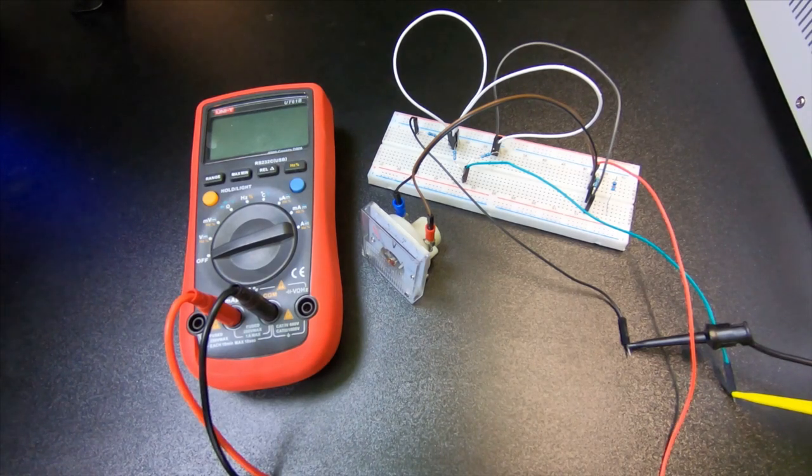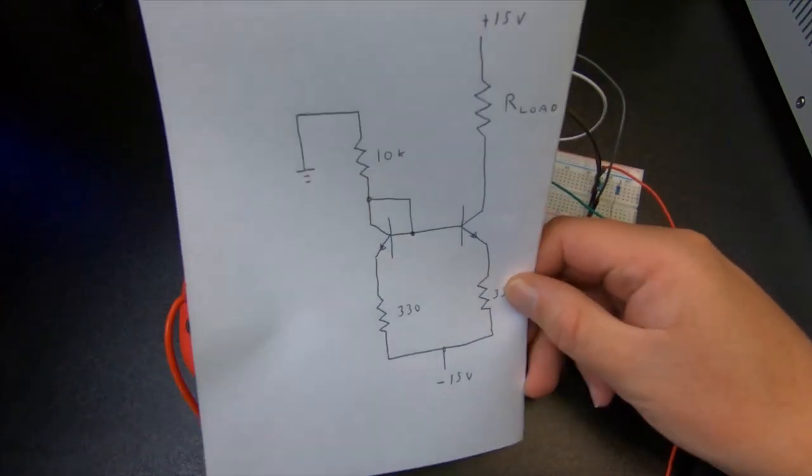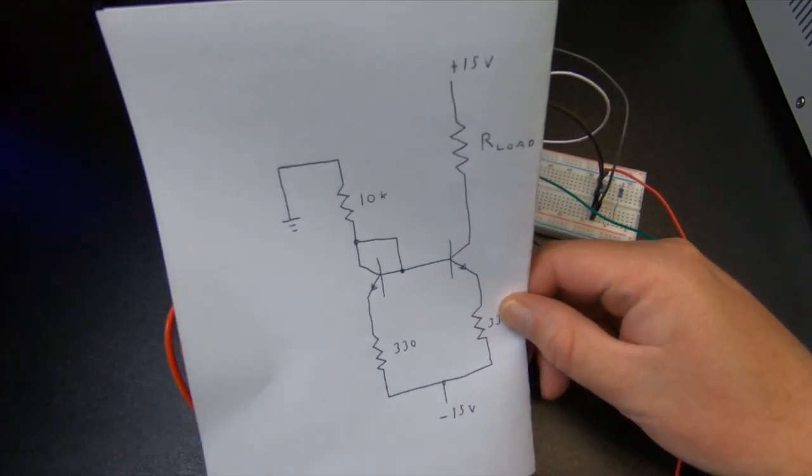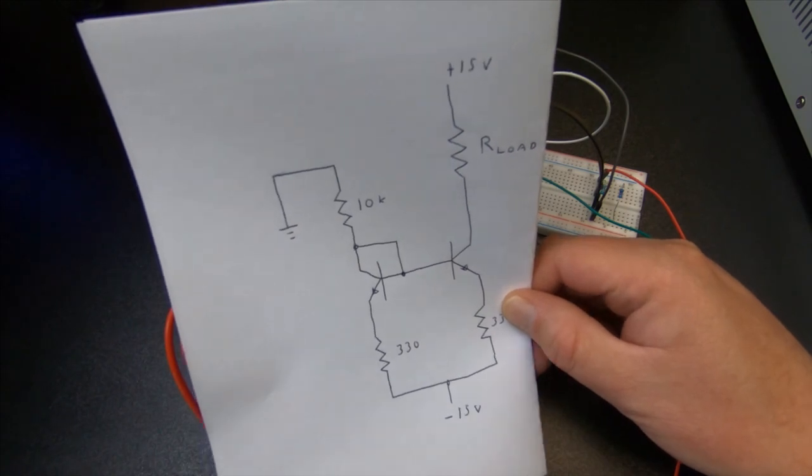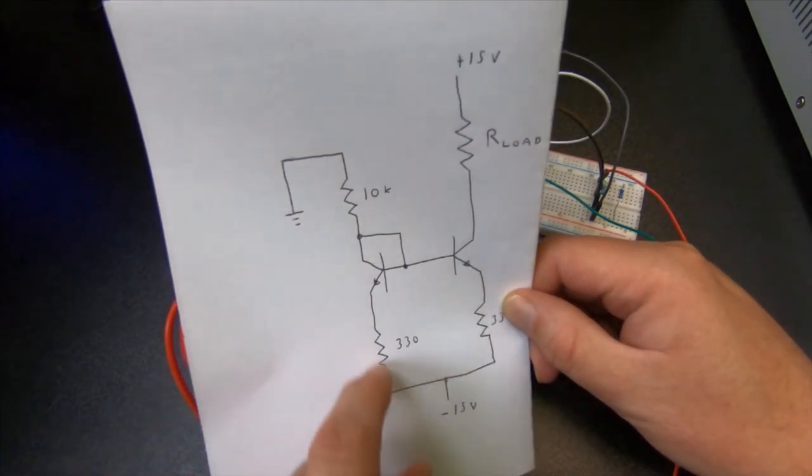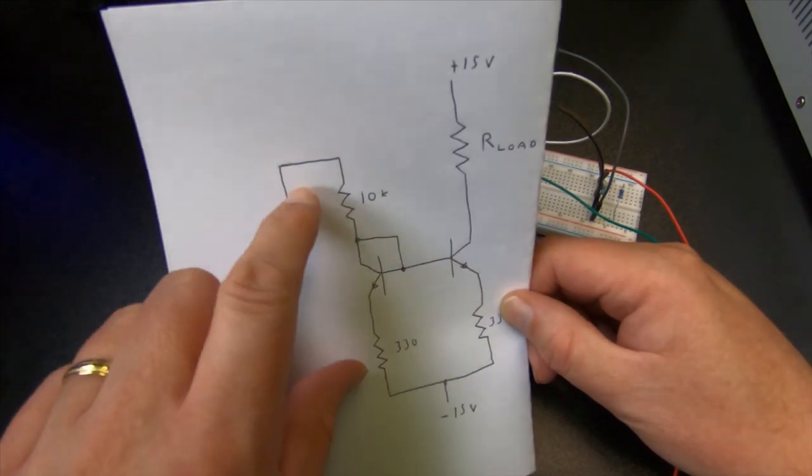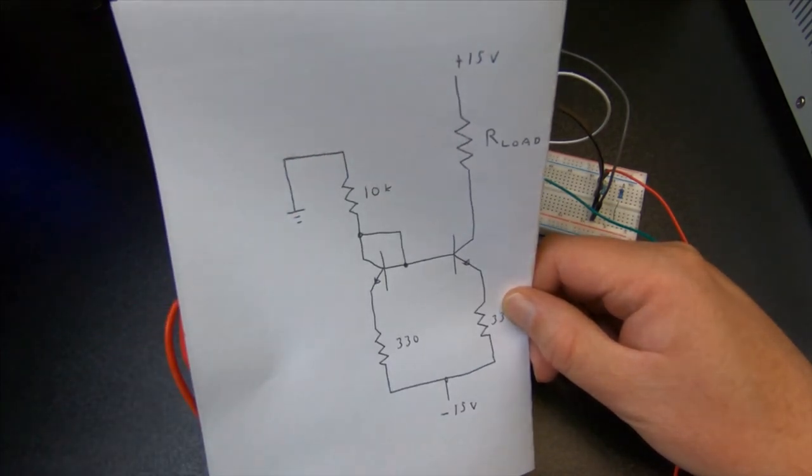So anyway, here's the first circuit. It looks like this. This is called a mirror configuration, so you have a transistor circuit on this side, a voltage divider basically,